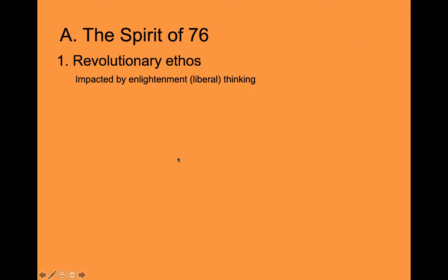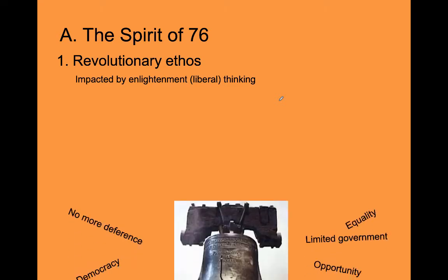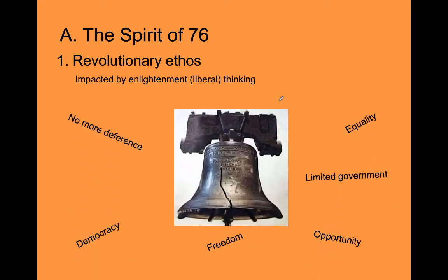The spirit of 1776 — let's start there. This is an idea of what we call the revolutionary ethos. What were people thinking about when the revolution was going on? What were they debating about? Basically, it's the Enlightenment in the United States. People were talking about equality, opportunity, freedom, democracy — all of these things that are part of the American ethos or way of thinking today. They really found their expression here during the revolution.